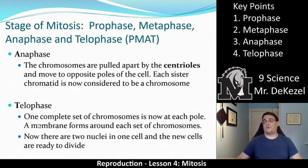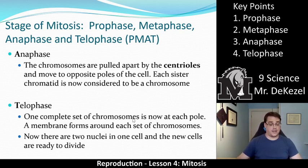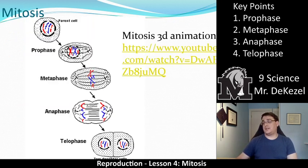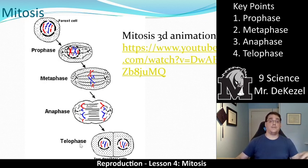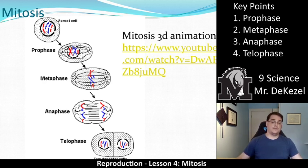In telophase, one complete set of chromosomes is now at each end, or each pole. A membrane forms around each set of chromosomes, creating the new nucleus — so there are now two nuclei in one cell. The new cells are ready to divide. In the telophase diagram, you can see the exact same chromosomes — one long blue, one short blue, one long red, one short red — in each half. Then cytokinesis occurs, which is the last step in the cell cycle, splitting those two daughter cells completely.